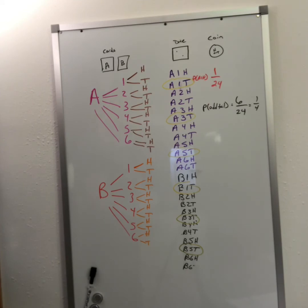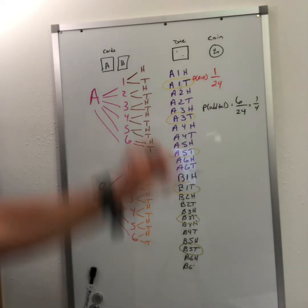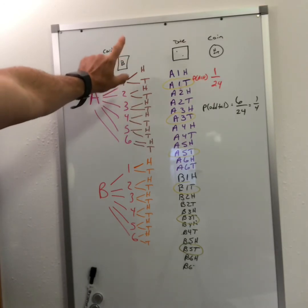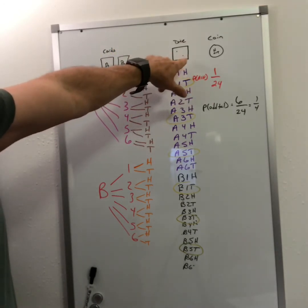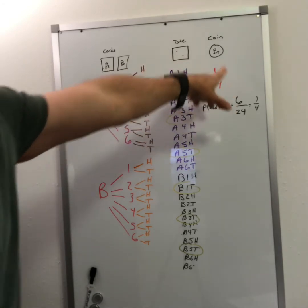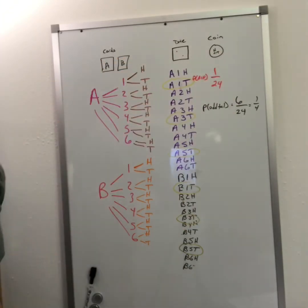So to find out the total number of outcomes, instead of having to make the whole chart, you just multiply how many possible outcomes here, times the possible outcomes of this situation, times the possible outcomes of this situation.